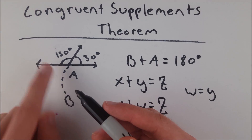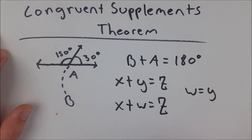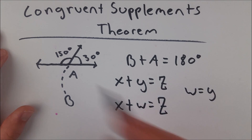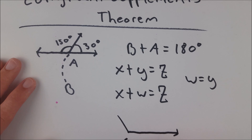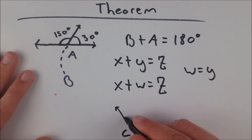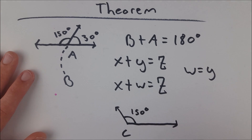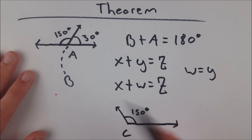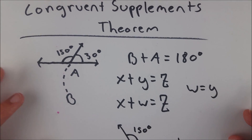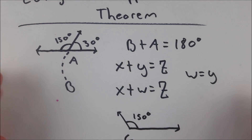So in this case, B is supplementary to A because it has a measure of 150 degrees, and 150 plus 30 — the measure of A — is 180. Now let's say we draw another angle supplementary to A down here. This is angle C, and if it's supplementary to A, it must have a measure of 150 degrees, because 150 is the only number you can add to 30 to get 180. So B is supplementary to A, C is supplementary to A, and thus they are forced to have the same measure. That's what the theorem says: if two angles are supplementary to the same angle, they must be congruent.